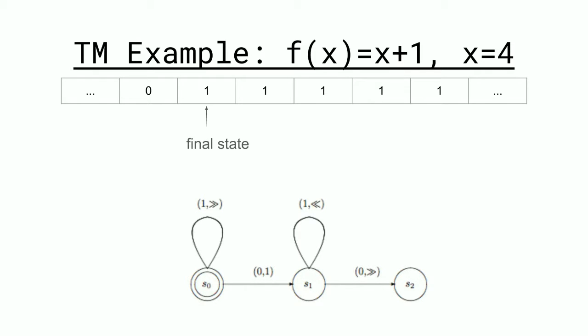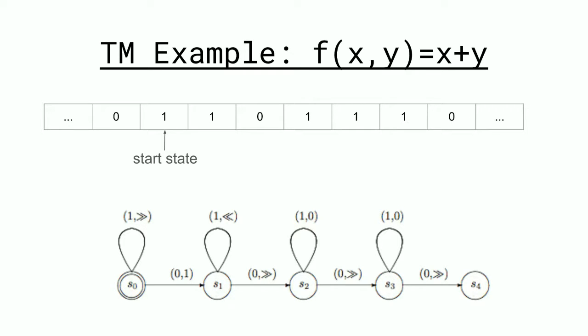We can build Turing machines to solve a whole number of problems — here's one for solving x plus y. Since x is 2 and y is 3, the final state will be a block of five 1s. Not only can we construct Turing machines to solve x plus 1 and x plus y, we can use them to solve a great variety of problems: x squared, x squared plus y squared, division, x to the 4 plus y to the 2 plus z to the 17. The Church-Turing thesis states that any function that can be computed can be computed by a Turing machine.